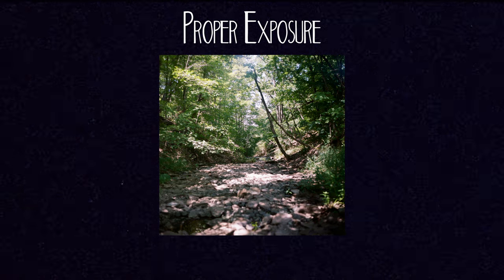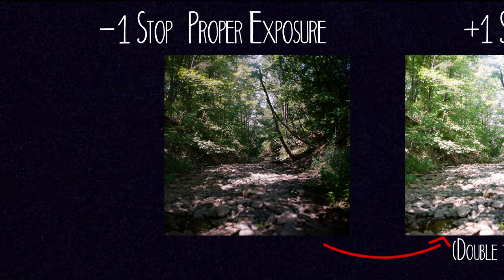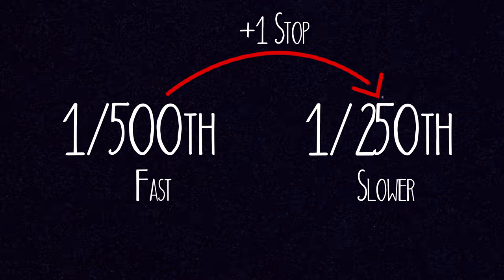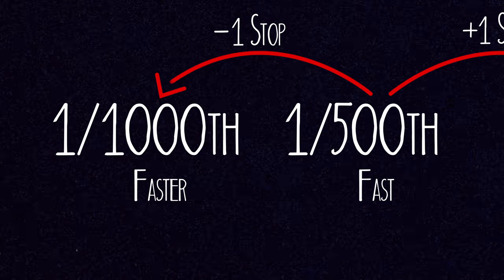When we're capturing exposure, we're talking about light in a unit called stops. Increasing your exposure by one stop means you're doubling the amount of light in your image, and decreasing your exposure by one stop means you're only capturing half the amount of light. ISO, aperture, and shutter speed all play a big part in determining the stops of light you're capturing. In terms of shutter speed, to capture double the amount of light — adding one stop — we divide our shutter speed in half. And to decrease our exposure by half the amount of light — subtracting one stop — we double our shutter speed.